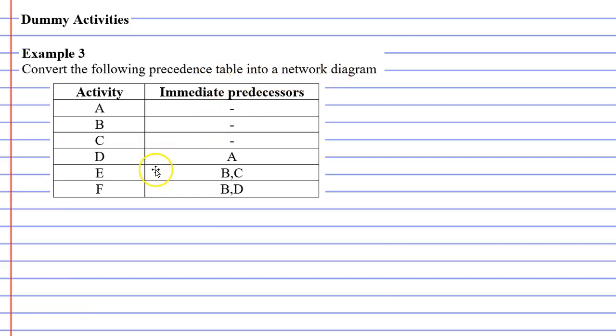So first of all, I just want to have a look and see if I'm going to get any dummy activities. And if I focus on activities E and F, I can see that both of these have a common immediate predecessor of B. They also have immediate predecessors that they do not share. They do not share activities C and D as immediate predecessors. Because of this, we know that we're going to have at least one dummy activity for this example.